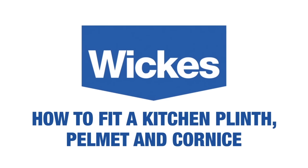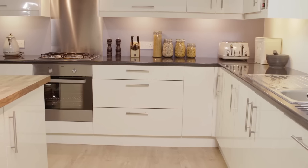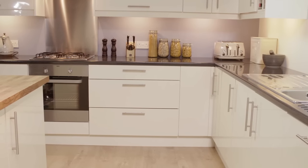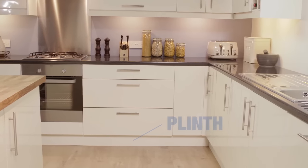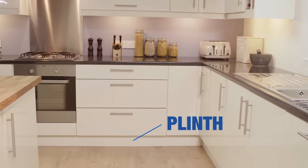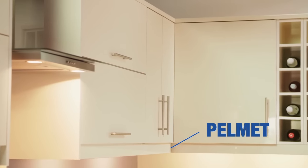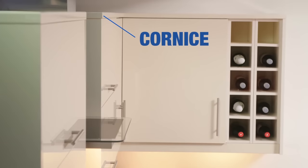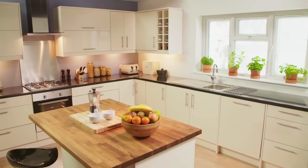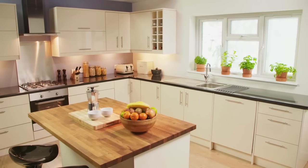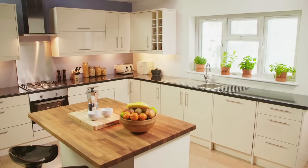How to fit a kitchen plinth, pelmet and cornice. A crucial part of assembling a kitchen is attaching the plinth under the cabinets, the pelmet under the wall cabinets and the cornice above them. The plinth will stop rubbish and debris collecting under your cabinets and all three together will complete the look of your kitchen.